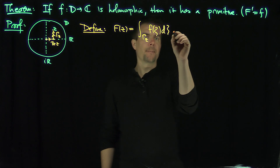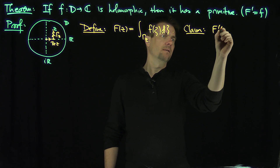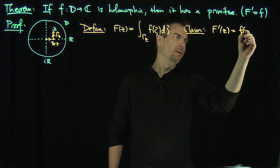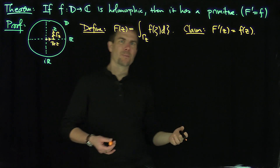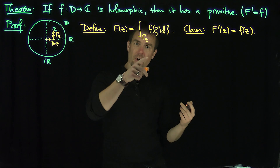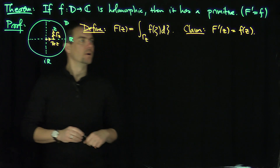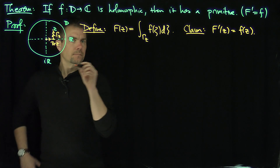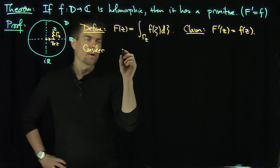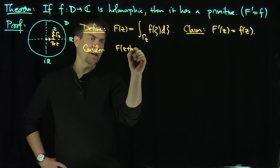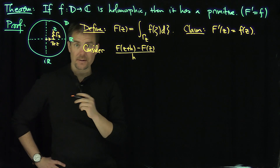So now what we want to do is we claim that F prime of Z is equal to F of Z. That should make intuitive sense — I'm doing the derivative of an integral, so I should get the function back inside. I have to show though that based on what this curve is, I in fact get F of Z. So let's do it. We're going to consider the difference quotient: F of Z plus H minus F of Z over H.